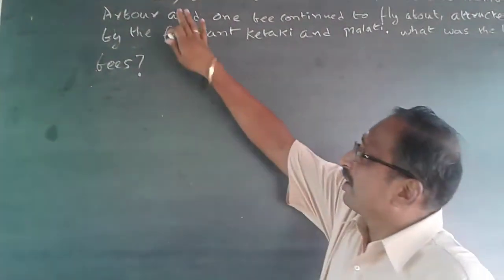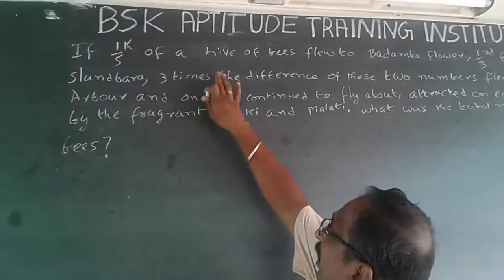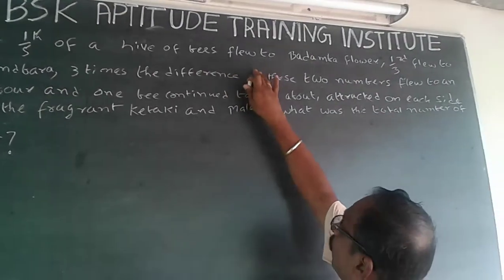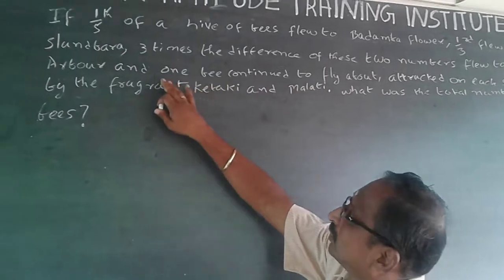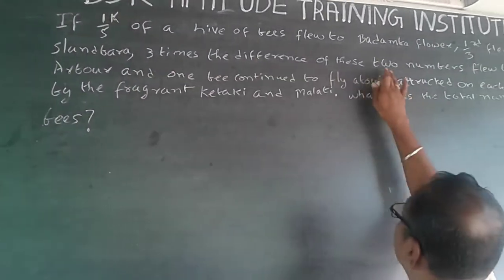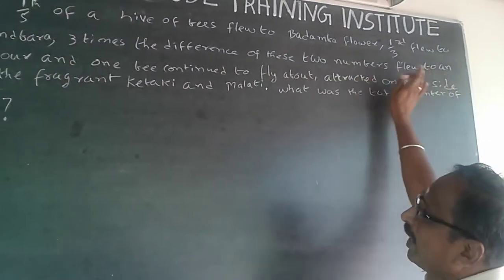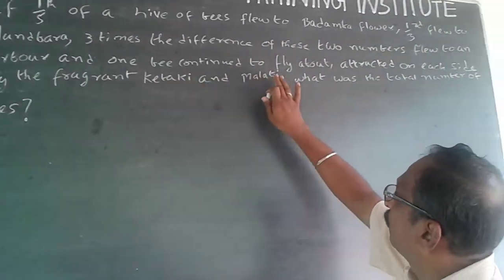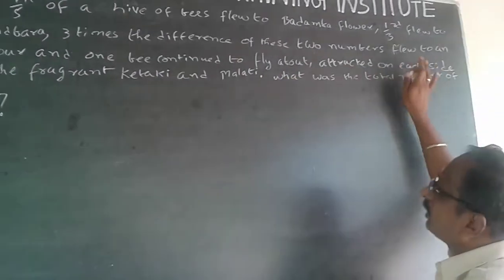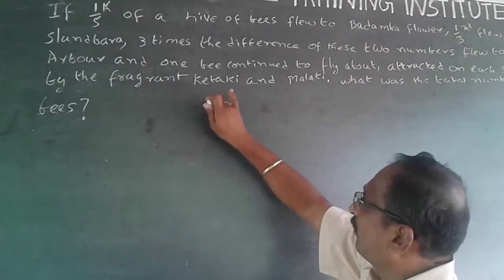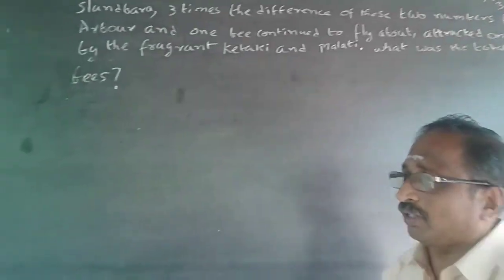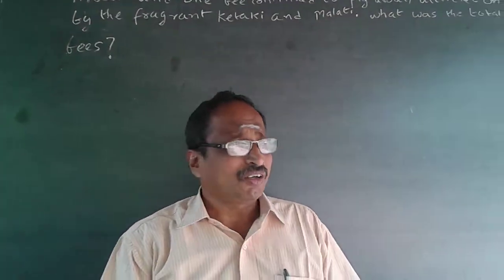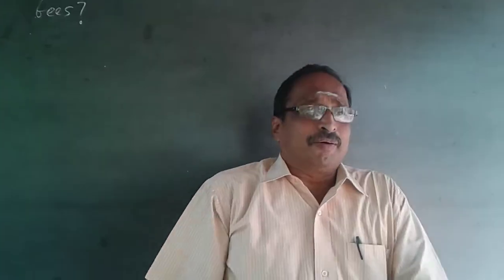Here the question is: if one-fifth of a hive of bees flew to Badamba flower, one-third flew to Slanpara, three times the difference of these two numbers flew to an arbor, and one bee continued to fly about attracted on each side by the fragment of Ketaki and Marathi, what was the total number of bees?